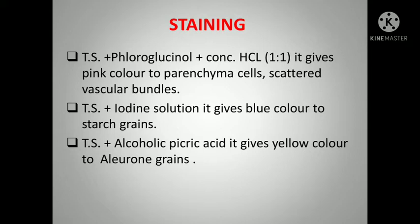After taking a thin transparent section, staining is done using specific microchemical reagents. First, TS plus fluoroglucinol plus concentrated HCl in 1:1 ratio gives pink color to the parenchyma cells and scattered vascular bundles. Second, TS plus iodine solution gives blue color to the starch grains. Third, TS plus alkaline picric acid gives yellow color to the aleurone grains.